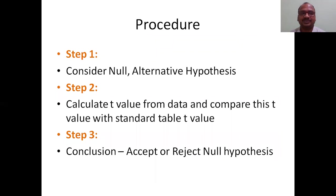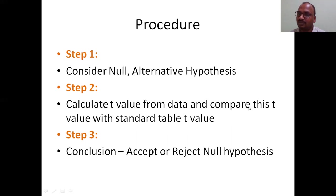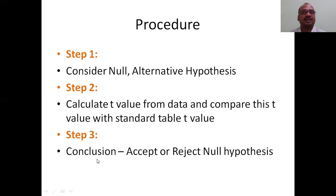There are three steps. Step one: consider the null hypothesis and alternative hypothesis. Step two: calculate the t-value from the data and compare with the standard table. Step three: conclusion — accept or reject the null hypothesis.